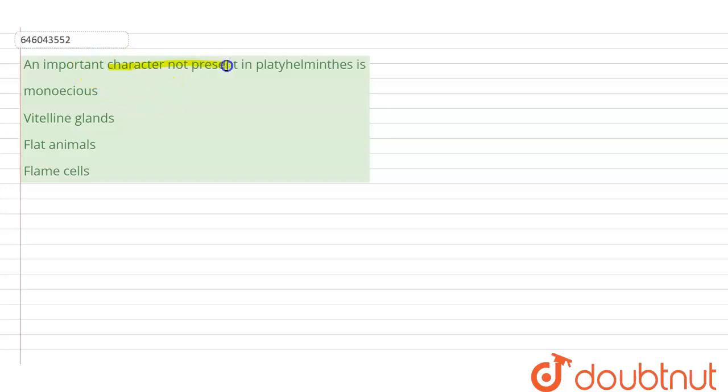The important character which is not present in the Platyhelminthes is which out of these? So when we talk about the Platyhelminthes, we're basically talking about the flat worms which are dorso-ventrally flattened and they have a bilateral symmetry.